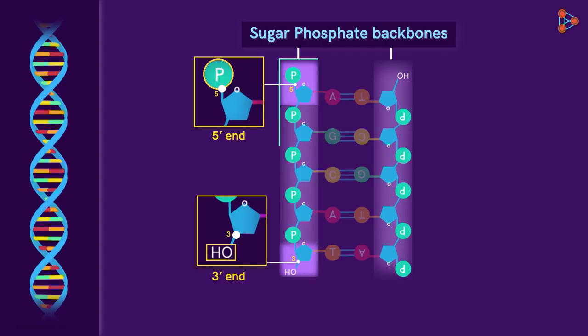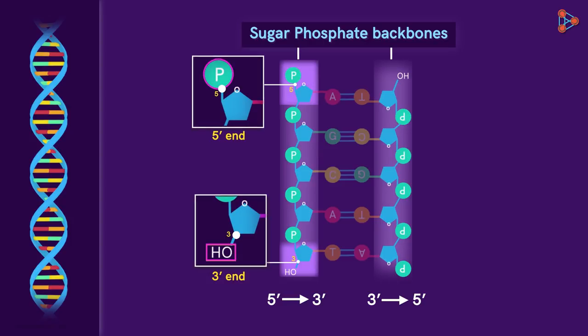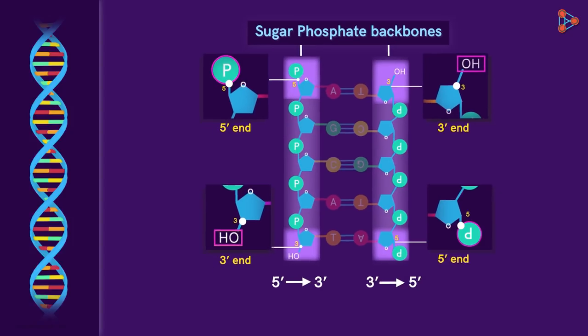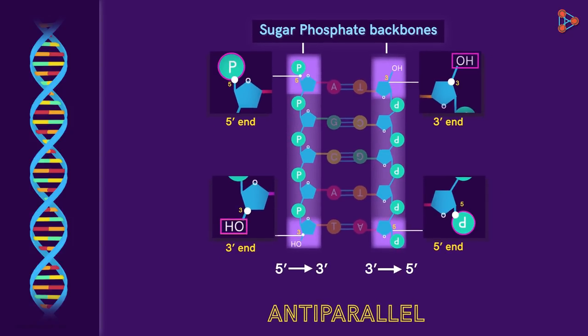So, the direction of this strand can be read as 5' to 3' from the free phosphate group to the free hydroxyl group. Now, can you guess the direction of the other strand? Give it a shot! That's correct! The direction of this strand will be read as 3' to 5'. That's because in this strand, it begins with a 3' end having the free hydroxyl group and ends with the 5' end having the phosphate group. This is how the two strands are said to be anti-parallel with respect to each other.